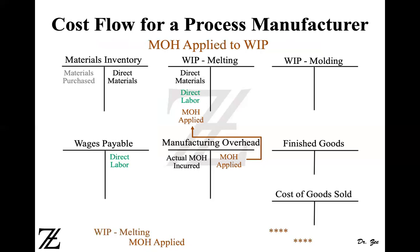Moving on to manufacturing overhead — MOH applied to work in process. I left the actual manufacturing overhead side as is. For recording actual manufacturing overhead entries, please look at my job order costing system video, as we record the actual side the same way. So I jumped directly to applied overhead. Because we are applying manufacturing overhead to the melting department, we debit work in process melting and credit MOH applied.